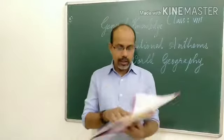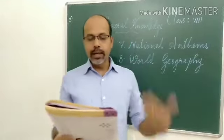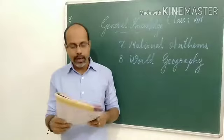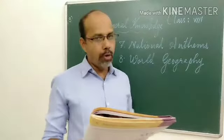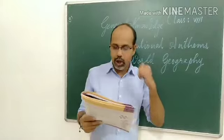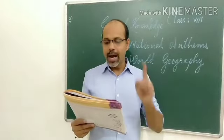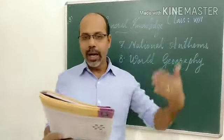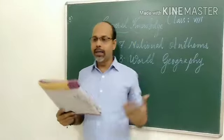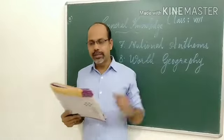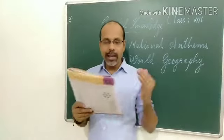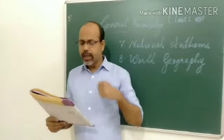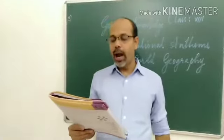I will give you the answers. The next one is the second chapter, World Geography, chapter number 8. There are some questions and options and we need to find the correct option. First question: the blank is the largest non-continental island in the world. It is a very large island but it is not a continent — it looks like a continent but it is an island only.